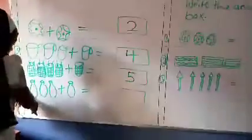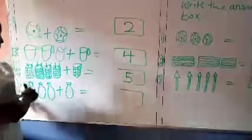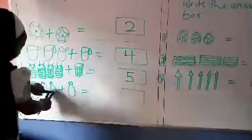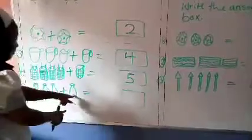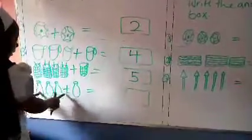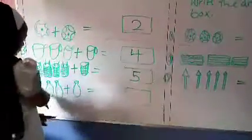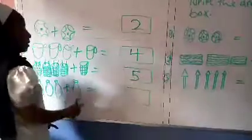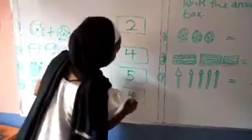Number 5. 1, 2, 3, 4. 1, 2, 3. Plus 1. 1, 2, 3, 4. 1, 2, 3, 4. There are how many bottles there? 4 bottles.